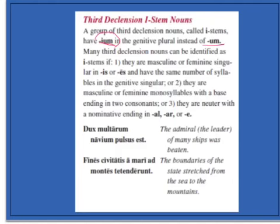The first rule is for masculine and feminine: if the nominative ends in IS or ES and has the same number of syllables as the genitive singular — like civis/civis, navis/navis, vestis/vestis — it is an I-stem.